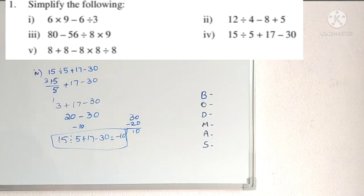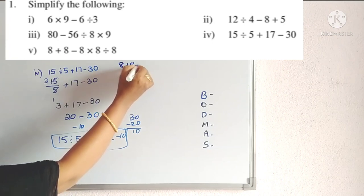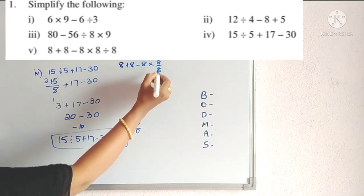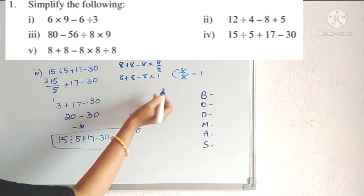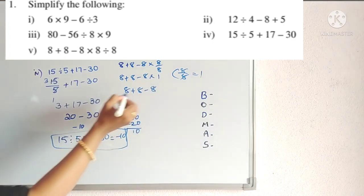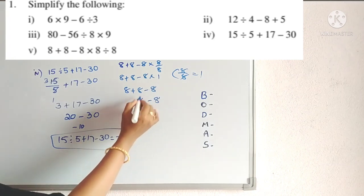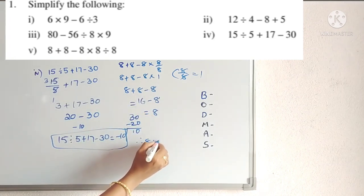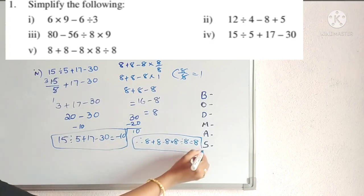Fifth problem: 8 + 8 − 8 × 8 ÷ 8. All four operations are there. First division: 8 ÷ 8 = 1. Now multiplication: 8 × 1 = 8. So 8 + 8 − 8. Now addition first: 8 + 8 = 16. Then 16 − 8 = 8. So 8 + 8 − 8 × 8 ÷ 8 = 8. Very nice — every number is 8 and the answer is also 8.